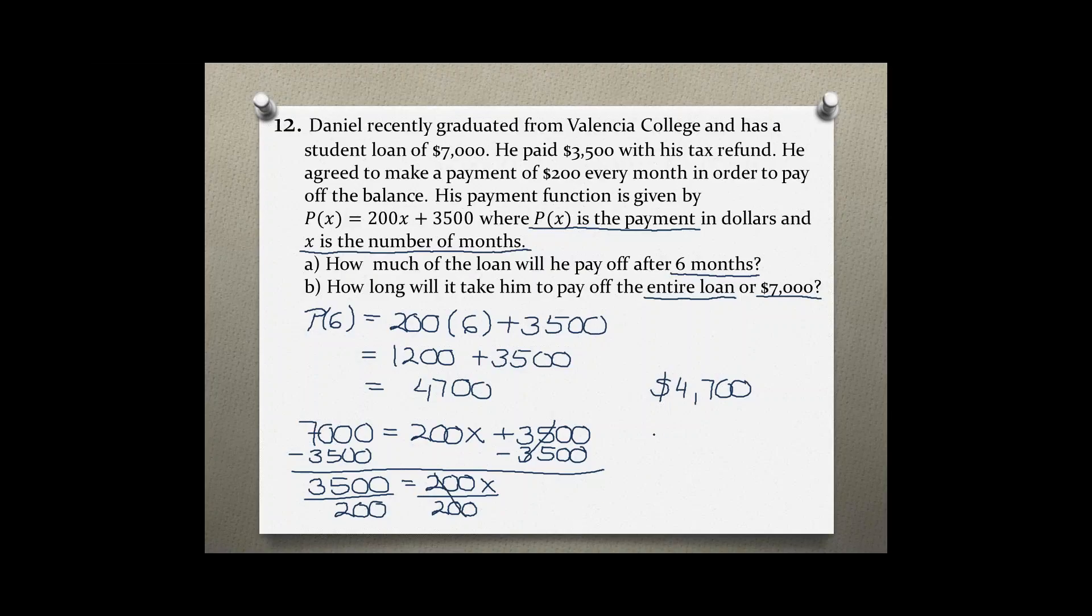Punching this into the calculator, you should get 17.5. So this means it will take him 17 and a half months to pay back this entire student loan. Because this is a real world problem, I will probably round up and say it will take him approximately 18 months to pay back his student loan.